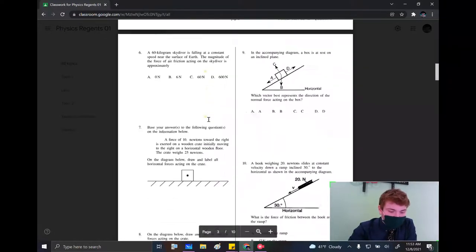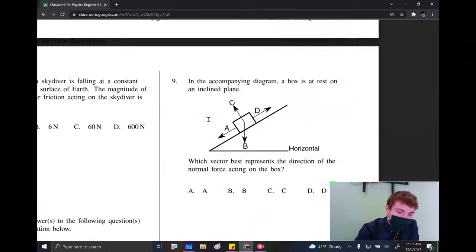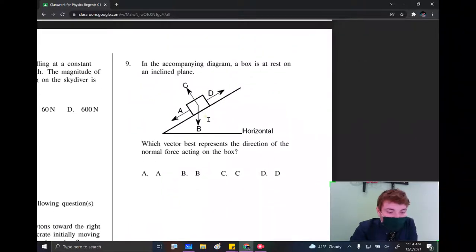Okay, let's continue with number nine. So number nine says, in the accompanying diagram, a box is at rest on an inclined plane. Which vector best represents the direction of the normal force acting on the box?